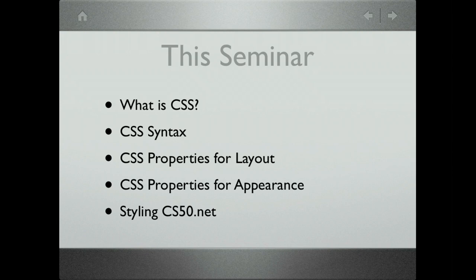Next, CSS syntax, which you'll see is very simple. Then we'll create a dichotomy between CSS properties for layout and CSS properties for appearance — layout meaning the things that determine how elements are displayed in relation to each other on the page, and appearance being specifics like making a font color blue or a font size of 16 pixels. Most of the time we'll spend actually styling and creating CSS for CS50.NET.